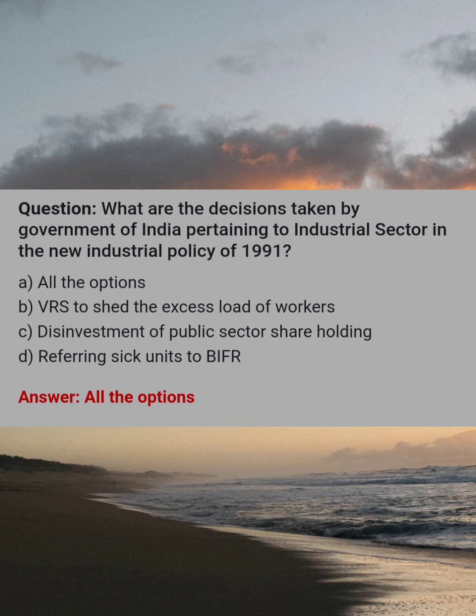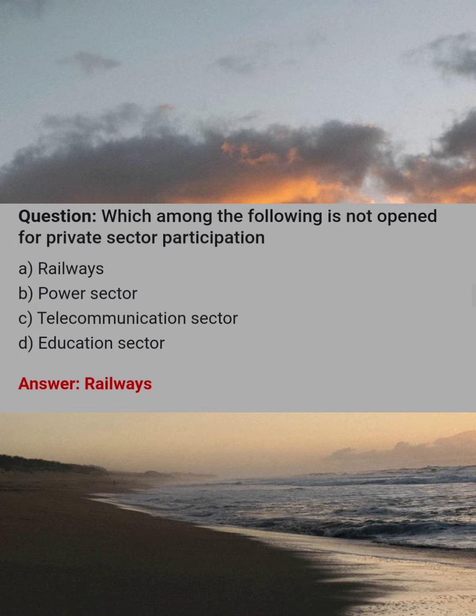What are the decisions taken by the government of India pertaining to the industrial sector in the new industrial policy of 1991? Answer: A, all the options. Which among the following is not open for private sector participation? Answer: A, railways.